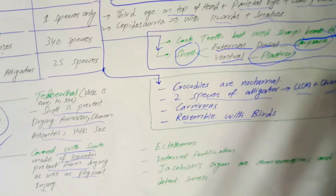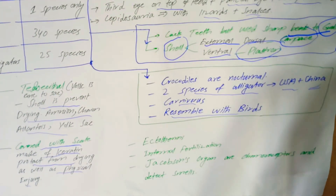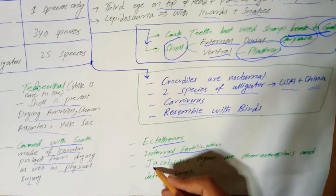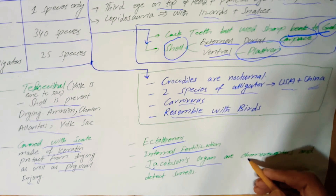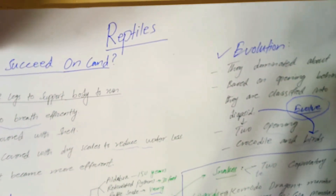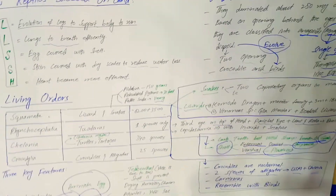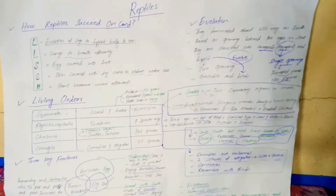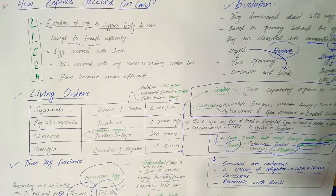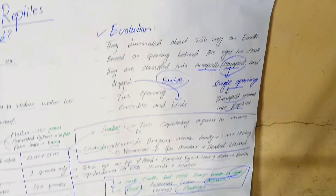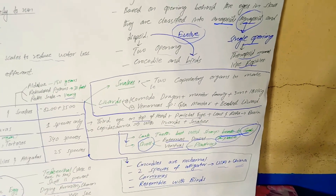Some remaining general features of reptiles: they are ectothermic (cold-blooded). Fertilization is internal. They possess Jacobson's organ, which acts as a chemoreceptor and detects smell. Lizards and snakes use their tongue to sense the outside temperature and smell from the environment. I hope this video was helpful — it covered how reptiles succeed on land, the LUSH acronym for five characters, living orders, three key features, evolution of reptiles, and characteristics of each living order.